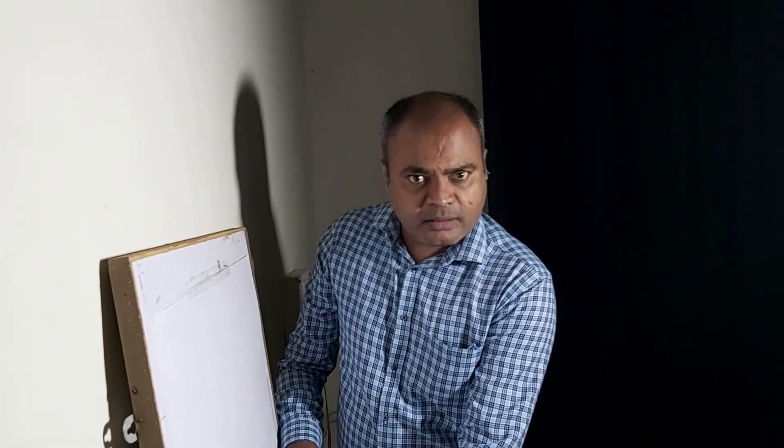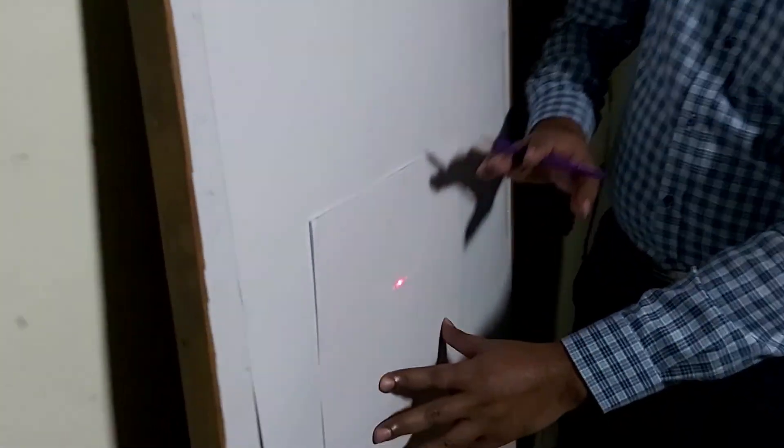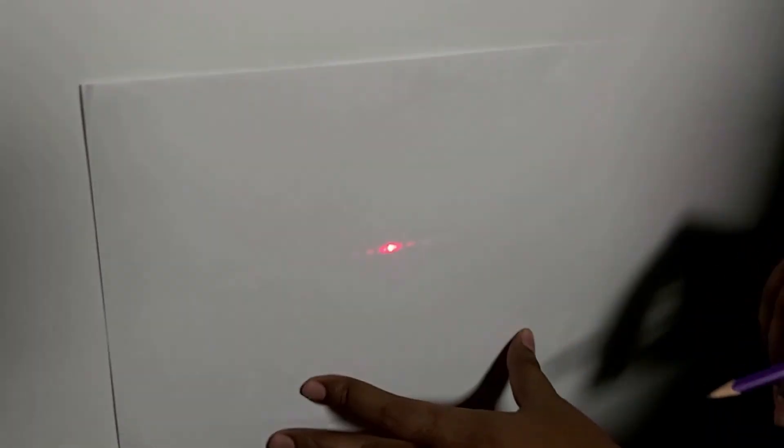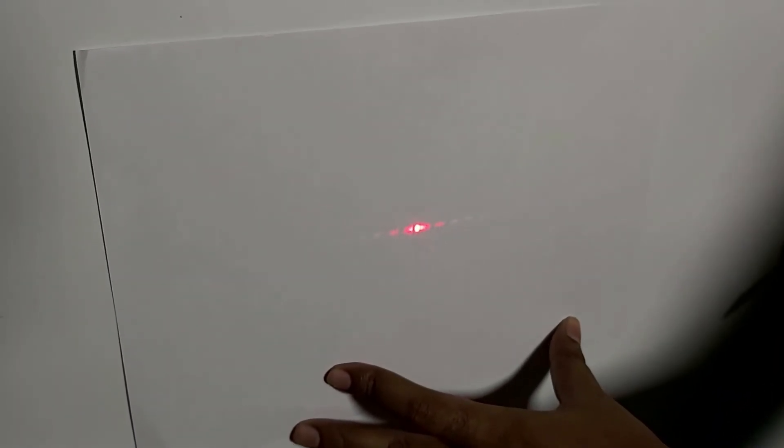Now we will measure the small d values. By holding a graph paper or plain paper on the screen we can record the minima. To record the minima we switch off the external light. We will see a very clear pattern and mark the central maximum using a pencil, then the center of the first minimum on the left hand side, second minimum, third, fourth, fifth, and similarly on the right hand side — first, second, third, fourth, and fifth.